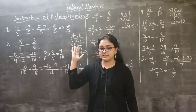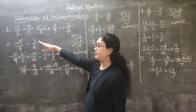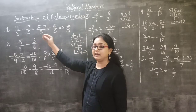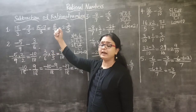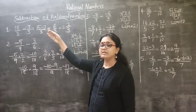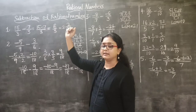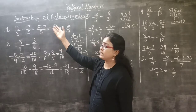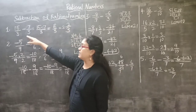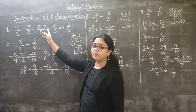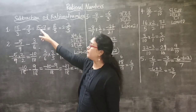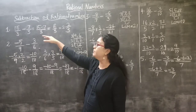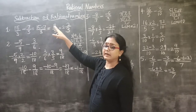The first example is 5 by 3 minus 7 by 3. Both are like fractions here. When it is like fractions, we can directly subtract the numerators and keep the denominator as it is. So 5 minus 7: I have written 15 minus 7 by 3 because the denominator should be kept the same. What is 15 minus 7? It is 8. So the answer is 8 by 3.